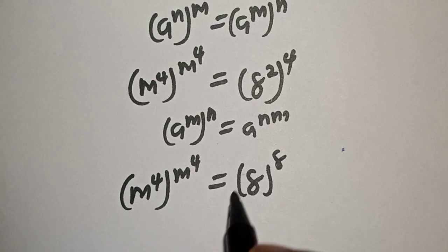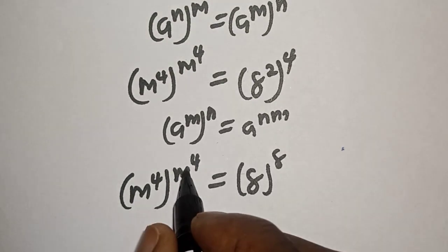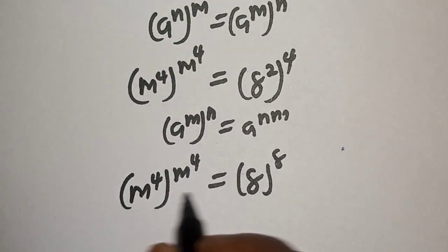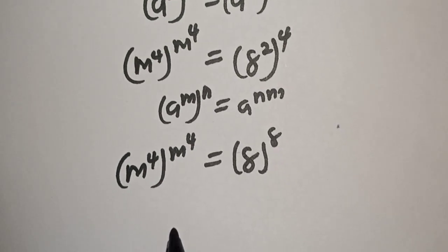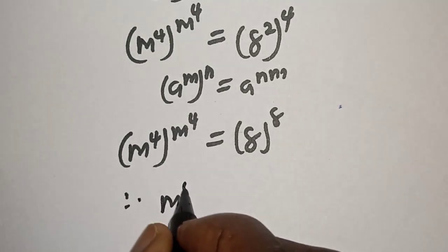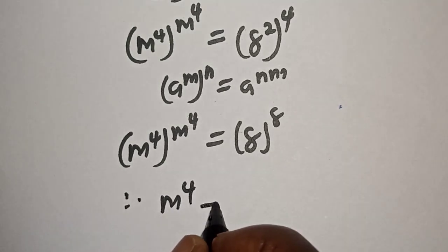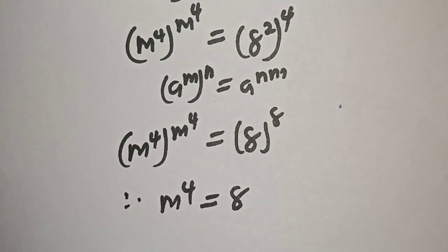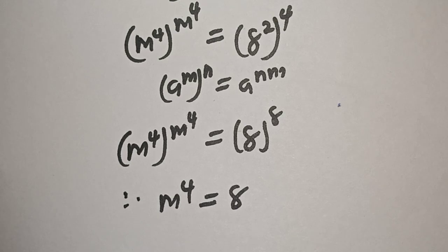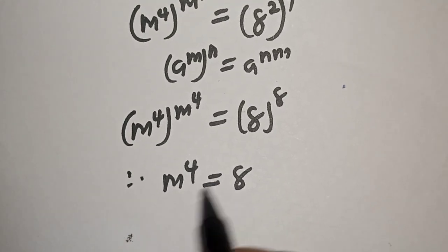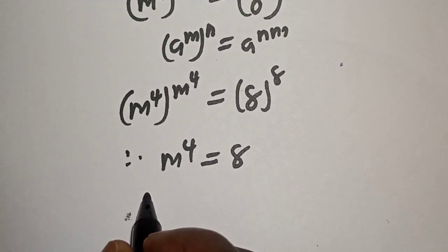From here, we can see that the exponent is equal to 8 and the base is equal to 8. Therefore, m raised to power 4 is equal to 8. Then let's take the fourth root of both sides.